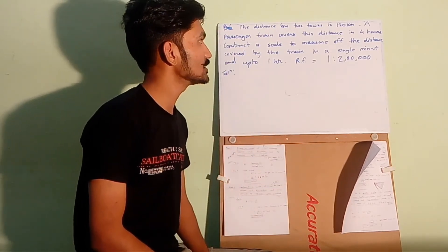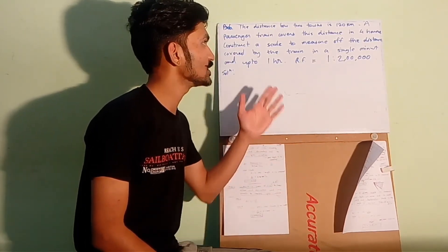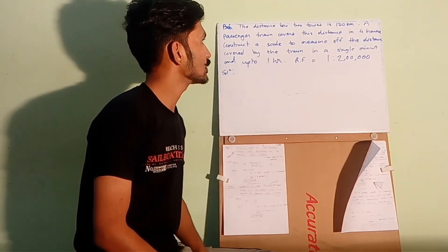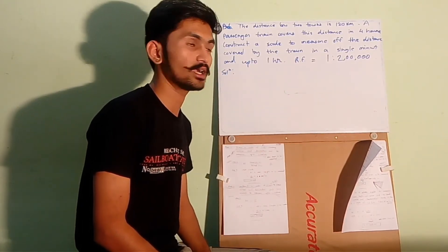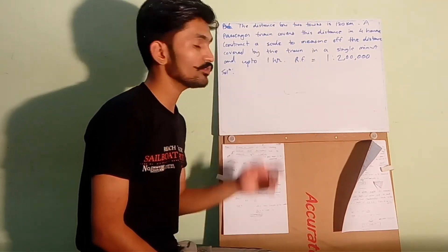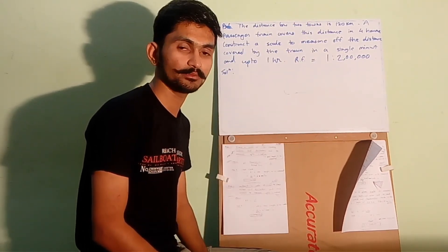So the question is: the distance between two towns is 120 km. A passenger train covers this distance in 4 hours. So these two lines will provide us the data which will help us to get the average speed of the train.